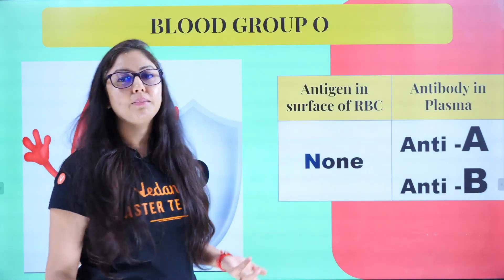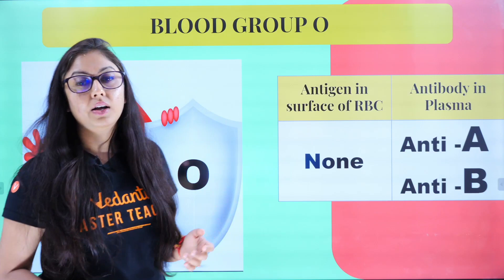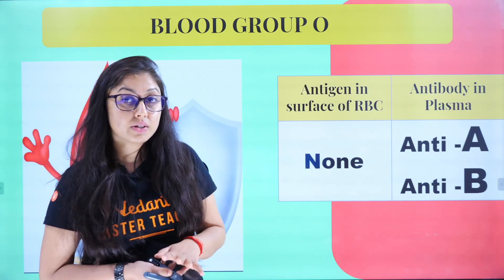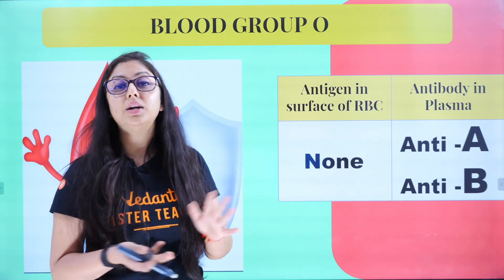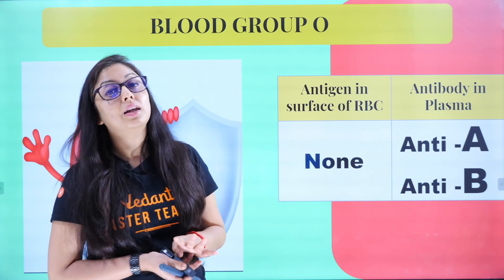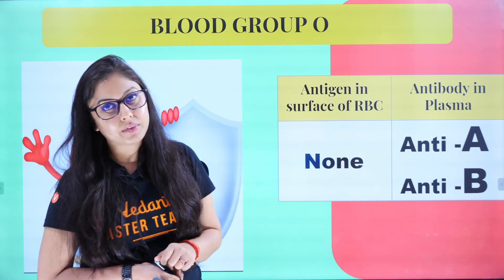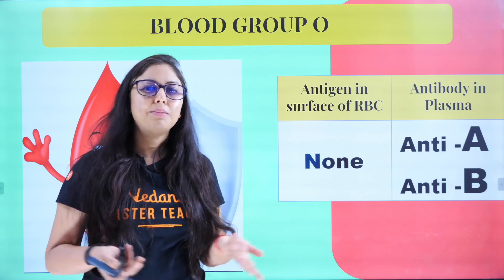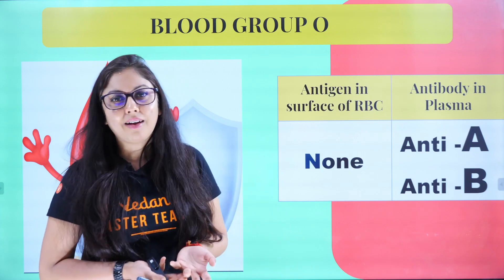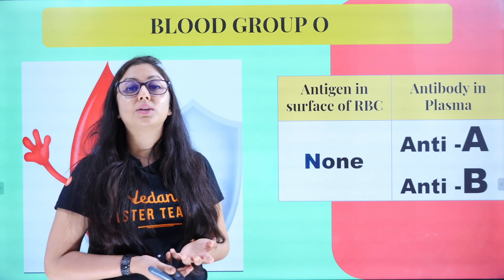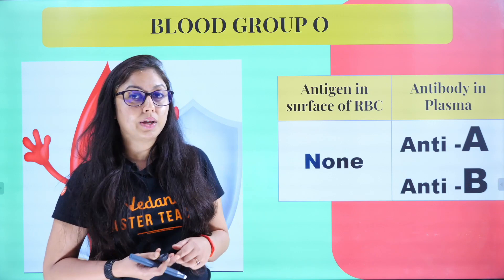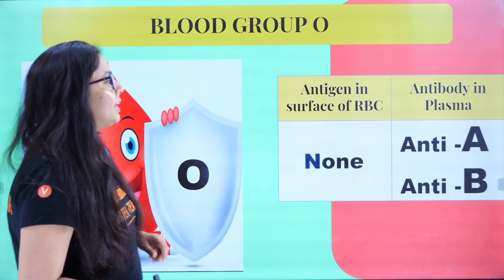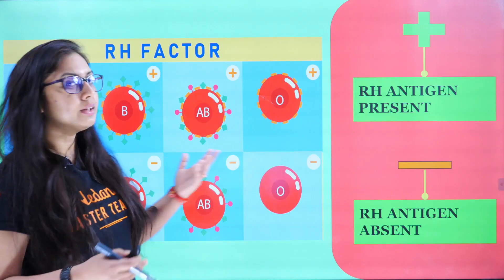Blood groups were discovered for the first time by Landsteiner and Wiener — two scientists who worked on this. Before their discovery, nobody knew what blood groups were or how they worked. Their discovery has helped enormously in medicine.